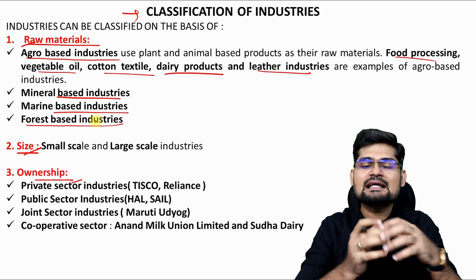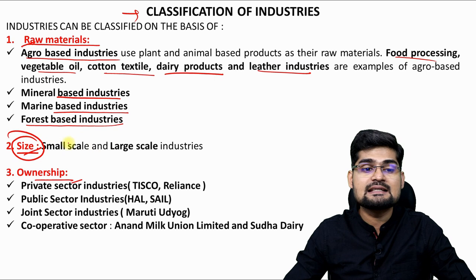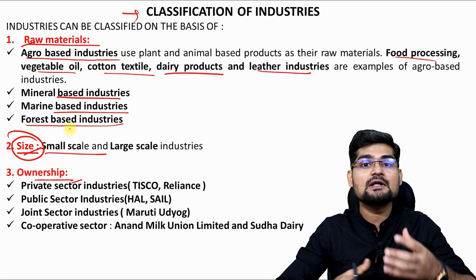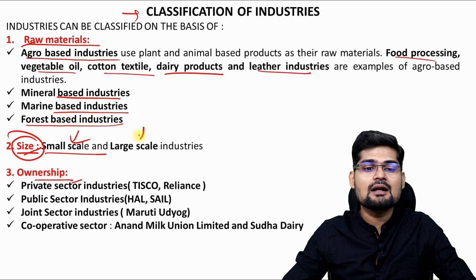The second type of classification is based on size — how big the industry is, how much area it requires and how much is its output. It's kind of a scale concept, so we have small-scale or large-scale industries.